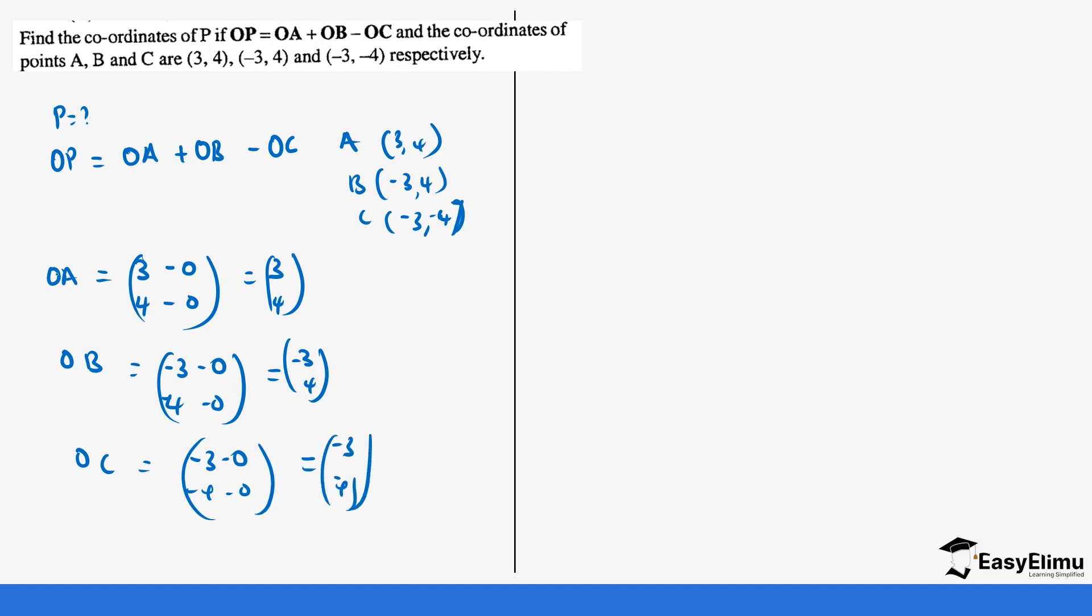Now we have our position vector A, position vector B, position vector C. So using these position vectors, we can come back to our question. Our question says OP equals OA plus OB minus OC. So let's write this. Our OA is (3, 4) plus our OB is (-3, 4) minus our OC, which is (-3, -4).